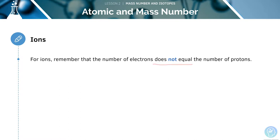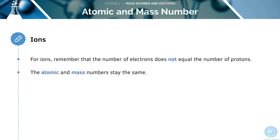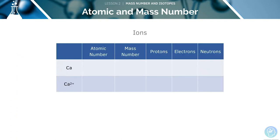When doing calculations involving ions, remember that the number of electrons does not always equal the number of protons. However, the atomic and mass numbers will stay the same. We'll look at the following example to help us make sense of this.